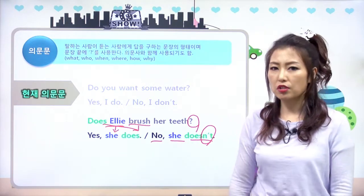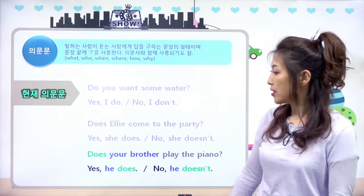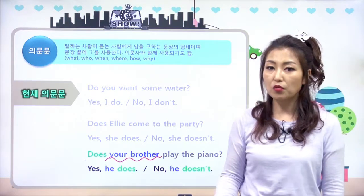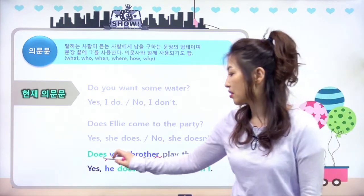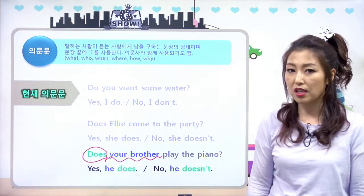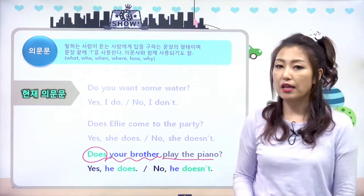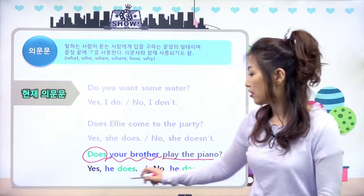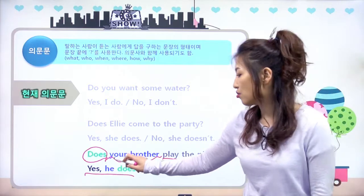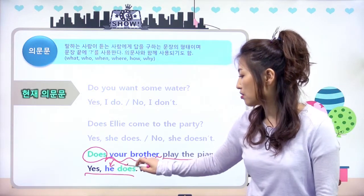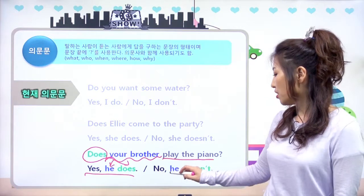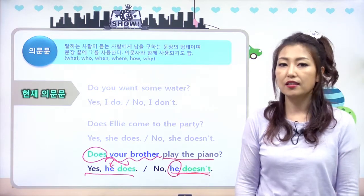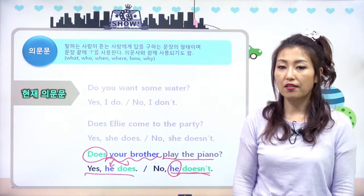'Does your brother play the piano?' your brother는 한 명이죠, 3인칭 단수이므로 does가 왔고요. '피아노 너네 오빠는 피아노를 치니?' 이런 얘기예요. 그랬더니 'Yes, he does. No, he doesn't.' your brother는 he로 받고, does로 물어봤으니까 does로 답하면 되는 거죠.